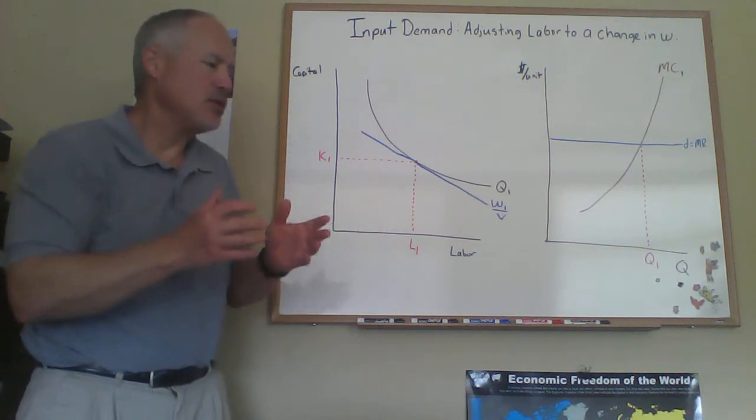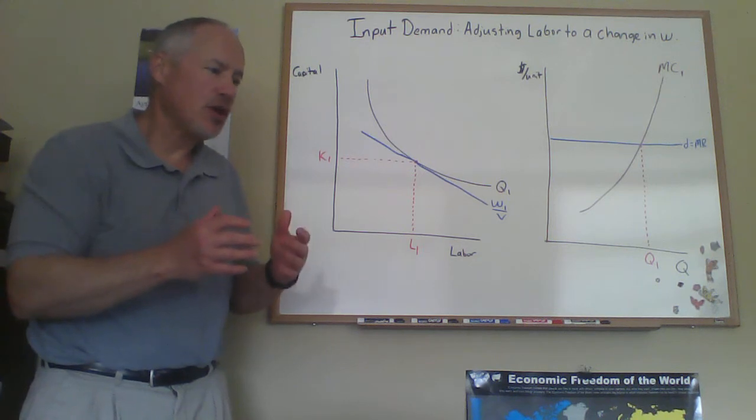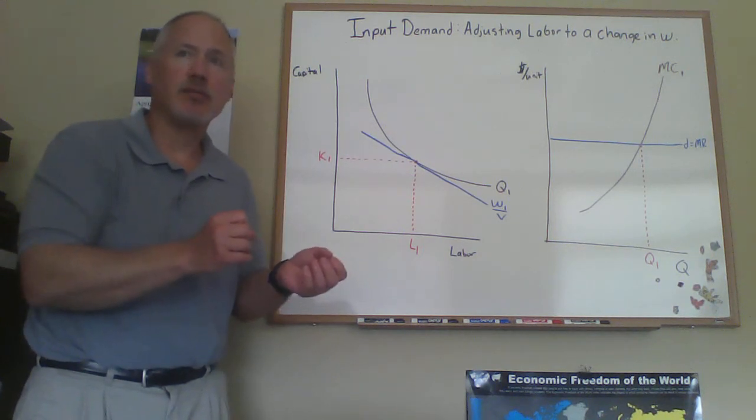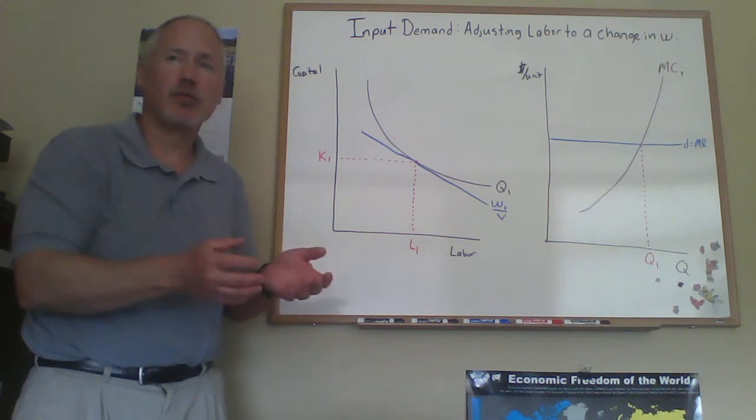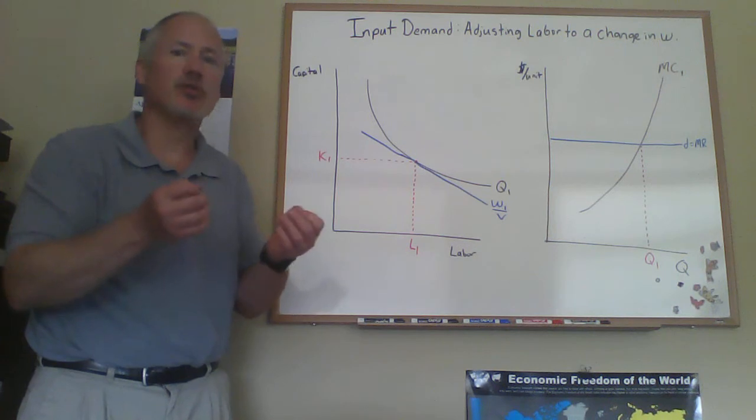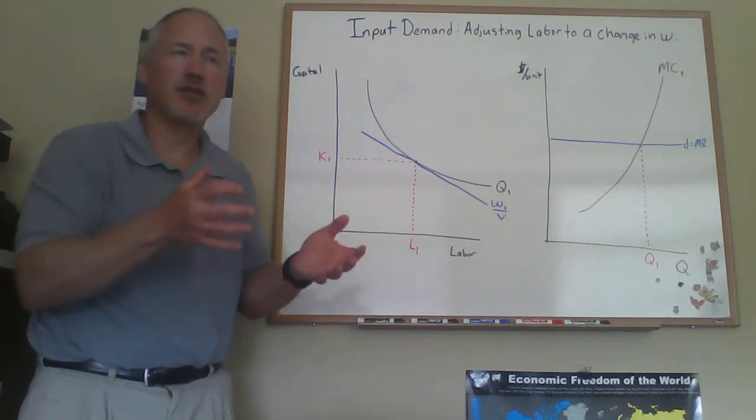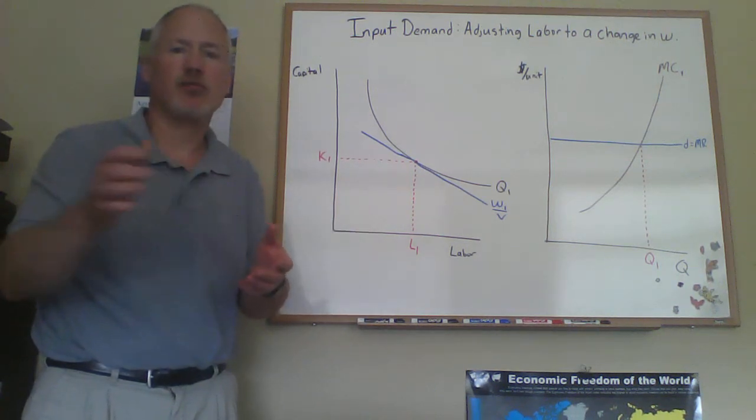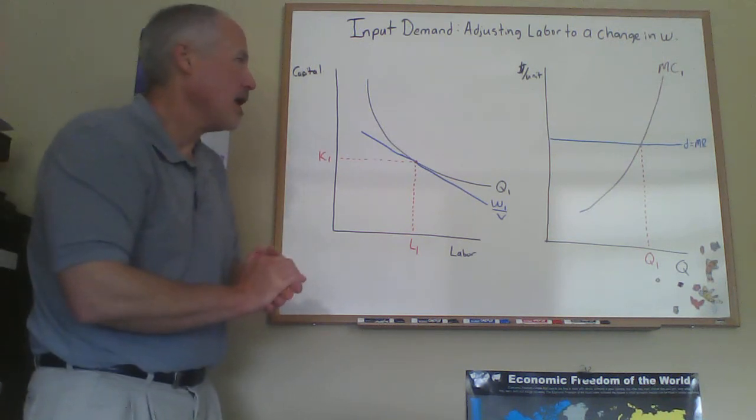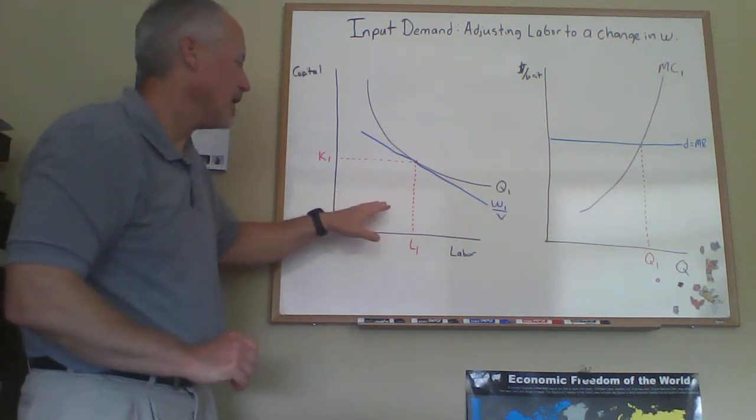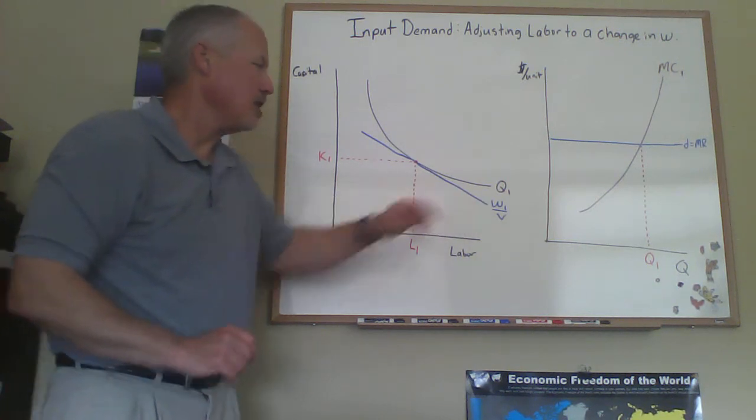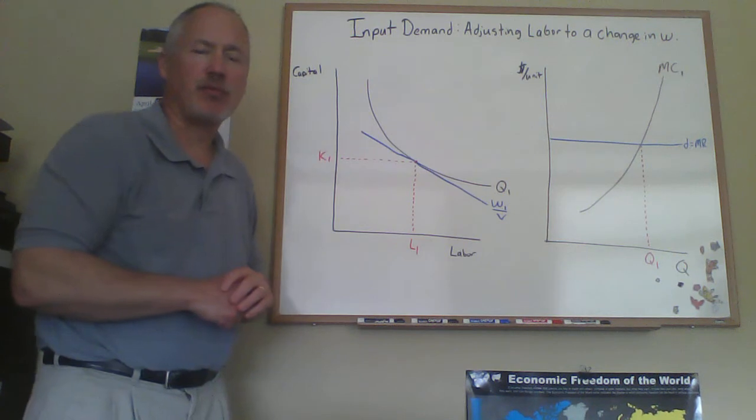This is what we would be doing to show the construction of the factor demand, similar to what we did back in Chapter 3, where we looked at the derivation of the consumer's demand curve for bananas, for one of the goods. So we'll need to have two diagrams here. The first one is going to be an isocost-isoquant diagram, and I've got it drawn up here with an initial price of labor that I've labeled W1.